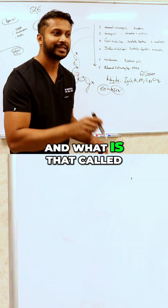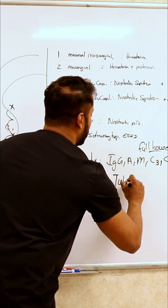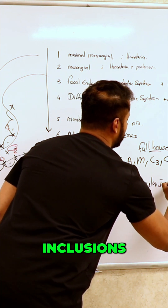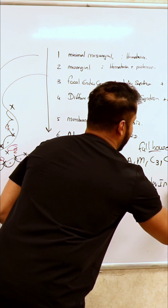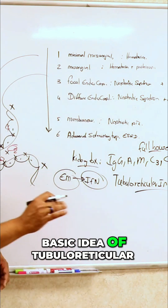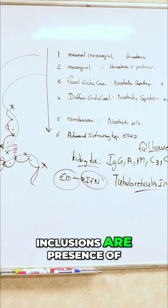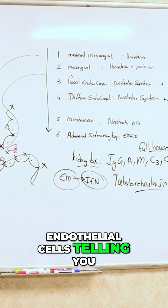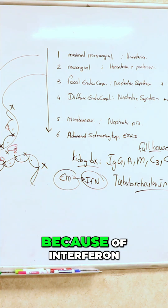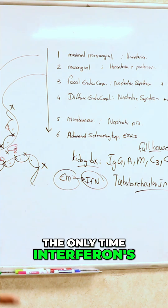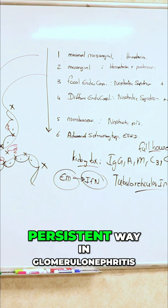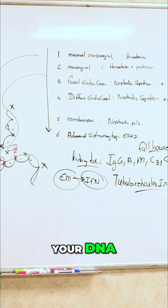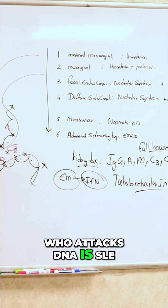This is called tubuloreticular inclusions. The basic idea is the presence of certain structures within the endothelial cells, indicating constant stimulation by interferon. The only time interferon is released in such a persistent way in glomerulonephritis is when you attack your DNA — and the only disease that attacks DNA that way is SLE.